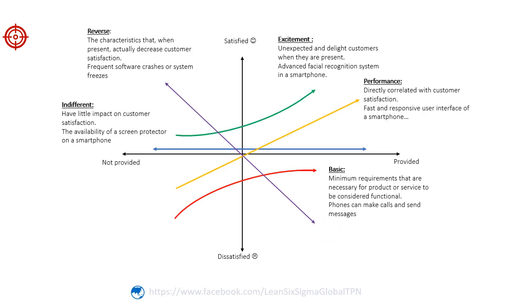By analyzing customer preferences and mapping product attributes onto the Kano model, businesses can identify which features are considered basic expectations, performance drivers, or potential sources of excitement. This information guides product development and resource allocation, allowing companies to focus on areas that generate high customer satisfaction. Understanding the Kano model allows businesses to not only meet customer expectations, but also exceed them in ways that generate excitement and delight. By doing so, companies can enhance customer satisfaction, build loyalty, and gain a competitive edge in the market.